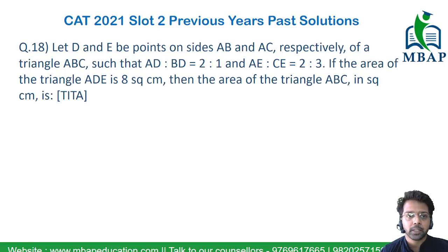Let's see the next question. The next question says, let D and E be the points on side AB and AC respectively of a triangle ABC such that AD is to BD is 2 is to 1 and AE to CE is 2 is to 3. If the area of triangle ADE is 8 square centimeter, then the area of the triangle ABC is equal to how much?